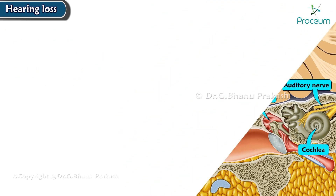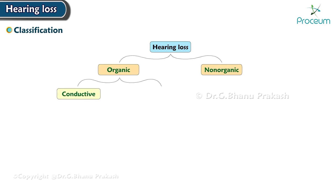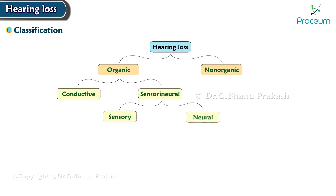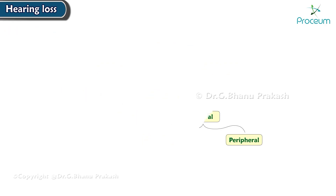Hearing loss is classified into organic and non-organic. Organic is further classified into conductive and sensorineural. Sensorineural has two components: sensory and neural. The neural component has central and peripheral pathways.